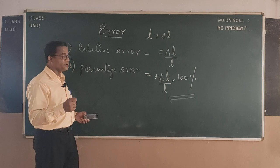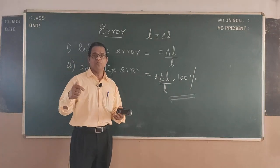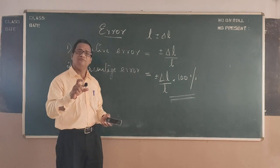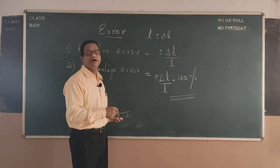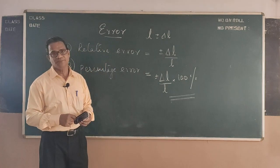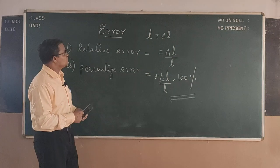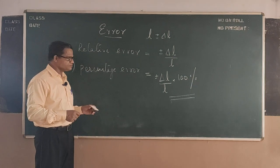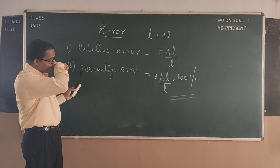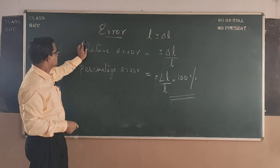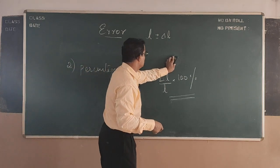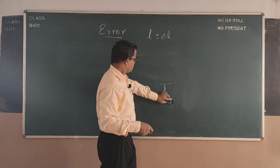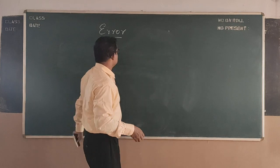But in the laboratory we have a very limited time for each experiment and therefore you will be taking a minimum of five readings and take the average of five readings. These are the things relating to the error part. Let us see how we find the relative error and percentage error out of a given measurement.